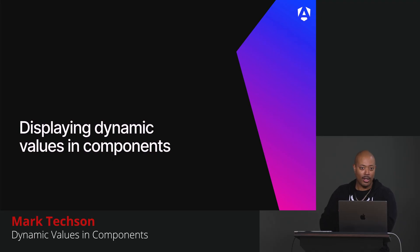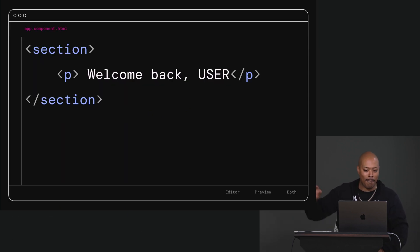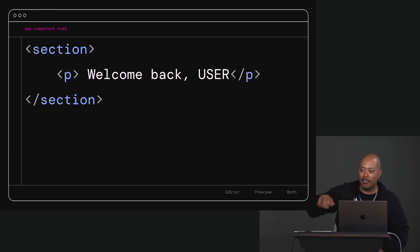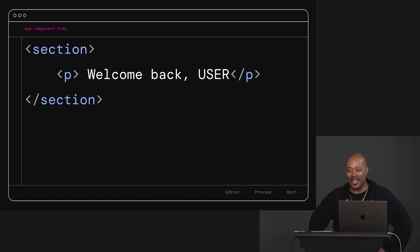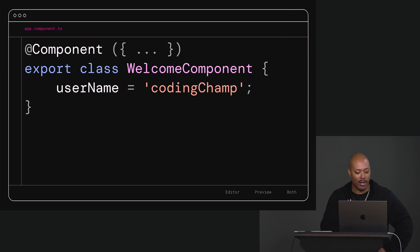Displaying dynamic values in components — let's talk about that because that is a core part. Right now we have static data, but we can do better. Let's take our component — this is app.component.html. This is not the best user experience. What if you signed into your banking app and it said 'Welcome User'? You'd think this is a scam. What you probably want to do is change that from 'user' to something actually real.